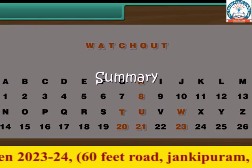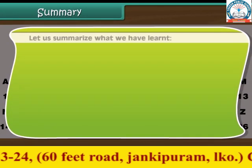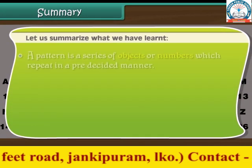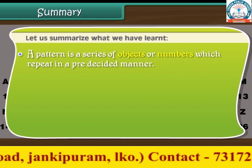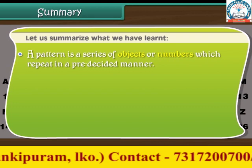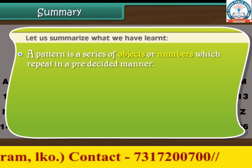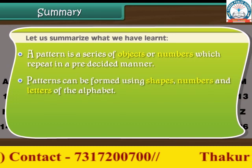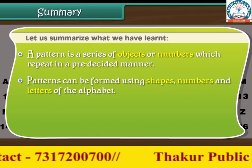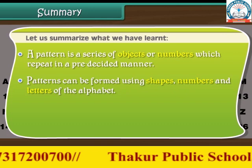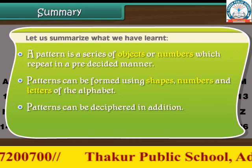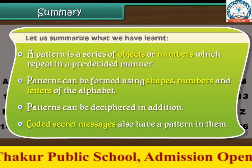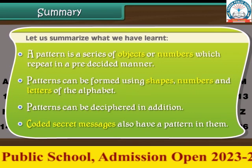Summary. A pattern is a series of objects or numbers which repeat in a pre-decided manner. Patterns can be formed using shapes, numbers and letters of the alphabet. Patterns can be deciphered in addition, and coded secret messages also have a pattern in them.